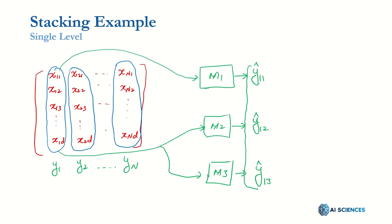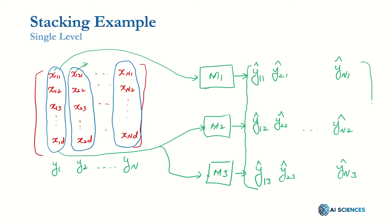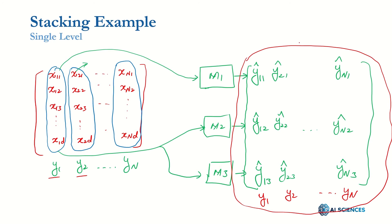If we plug in the second data point into the models, we get ŷ21, ŷ22, and ŷ23. Similarly, for all N samples we generate ŷN1, ŷN2, and ŷN3. This is the new dataset, and the corresponding labels are exactly the same labels: y1, y2, ..., yN. Now consider this as a completely new training dataset, and we fit a model — let's call it M4 — on this particular training dataset. The prediction of M4 is the final prediction.